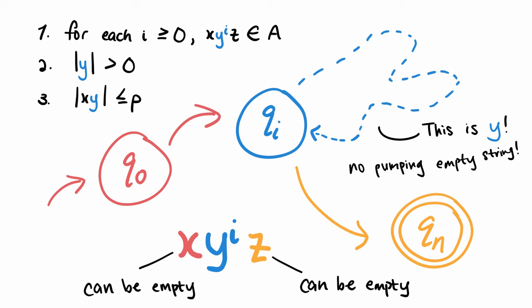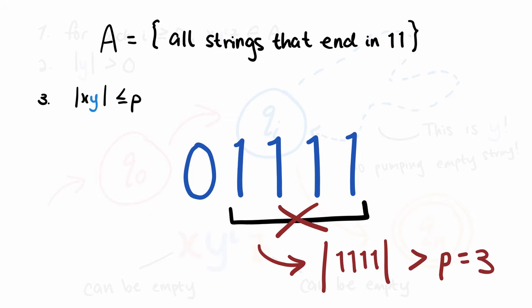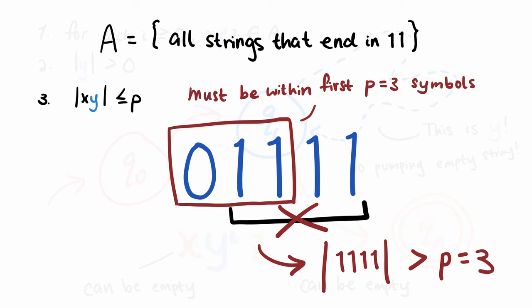Point 3 says that the length of Y can be at most P and must occur within the first P symbols. So if we look at our previous example, 01111, we cannot pump 1111, for example, because the substring 11111 has a length larger than P equals 3. And our pumping string has to be within the first P symbols, so the first three symbols. And 11111 is not within the first three symbols.